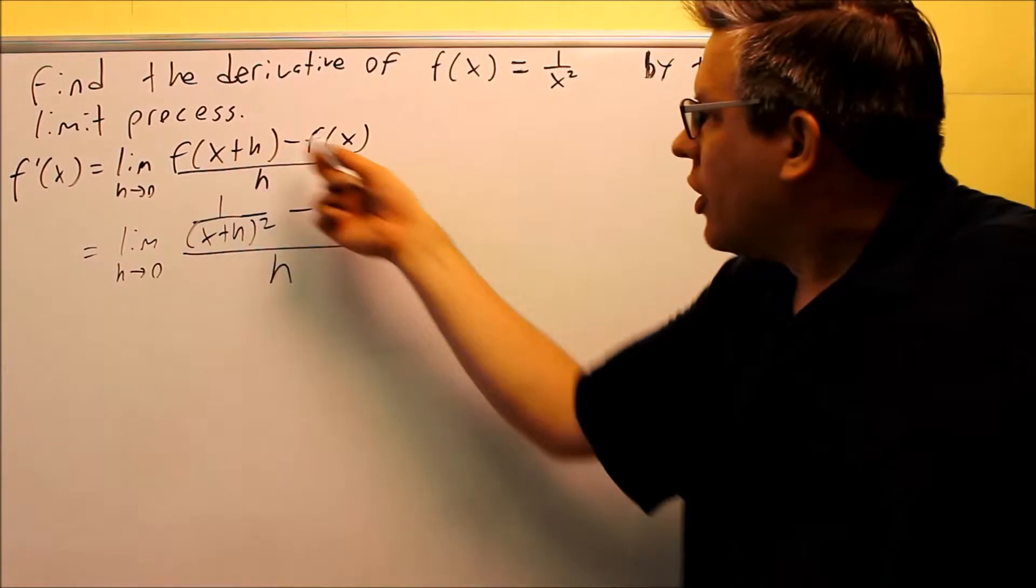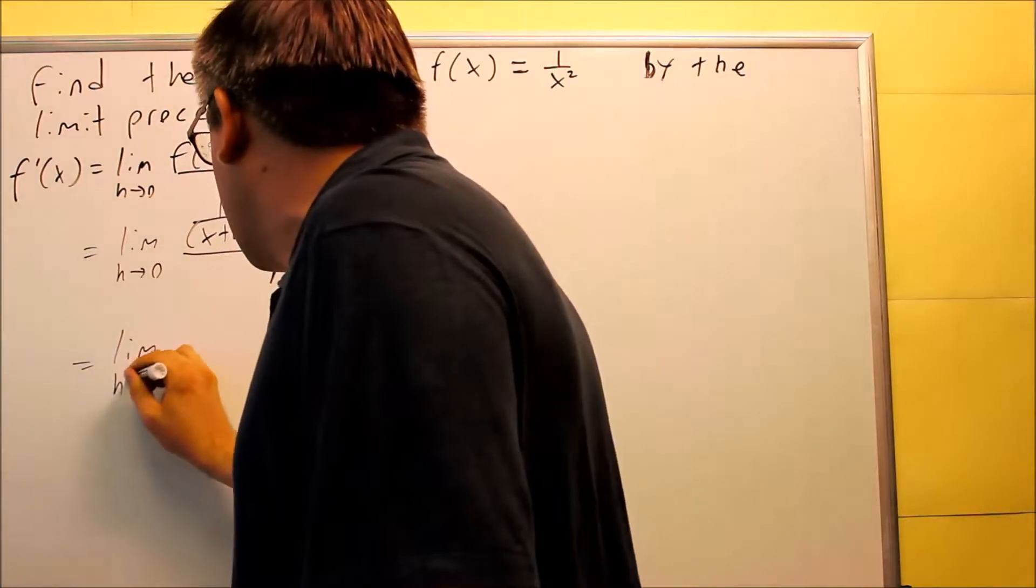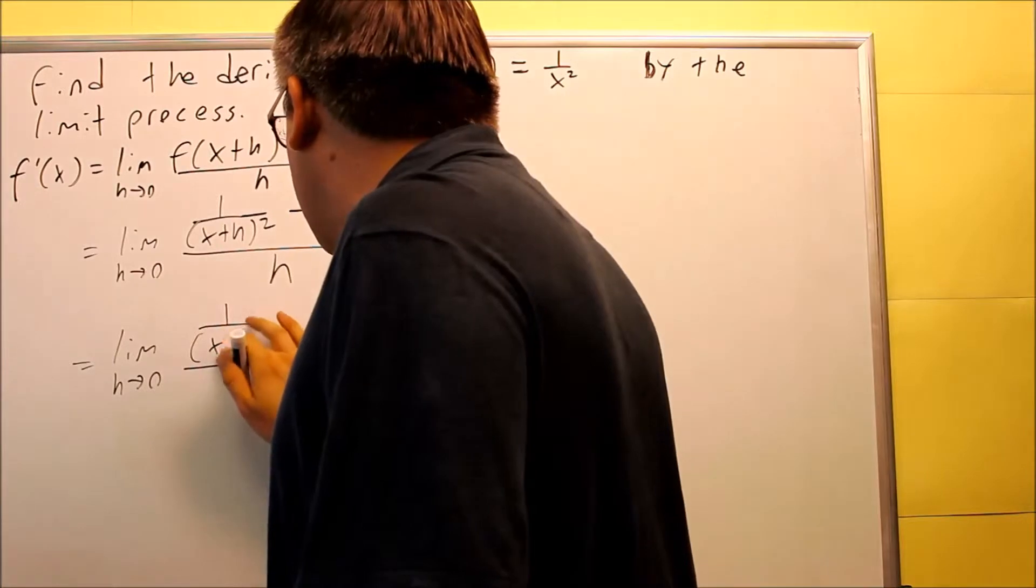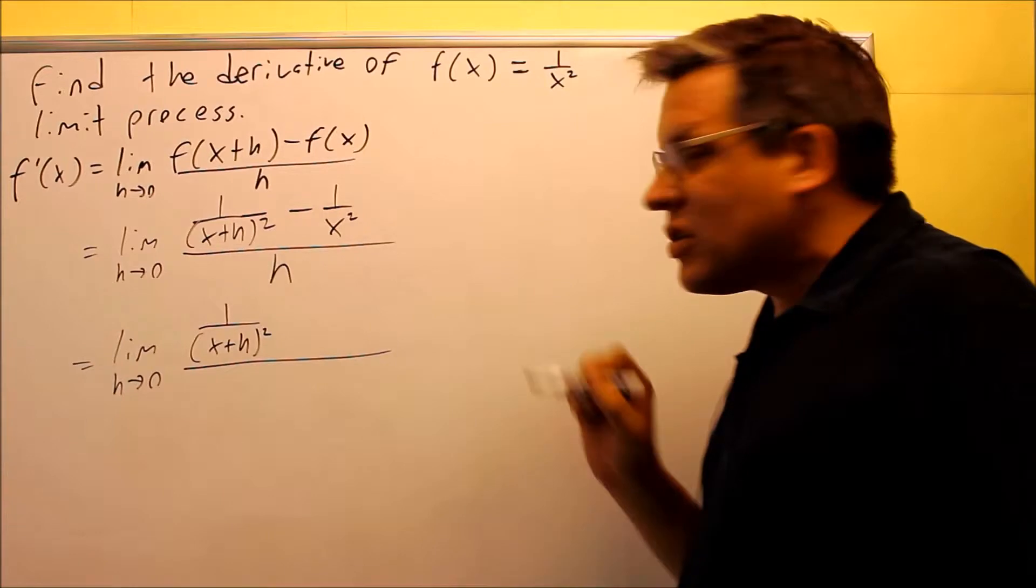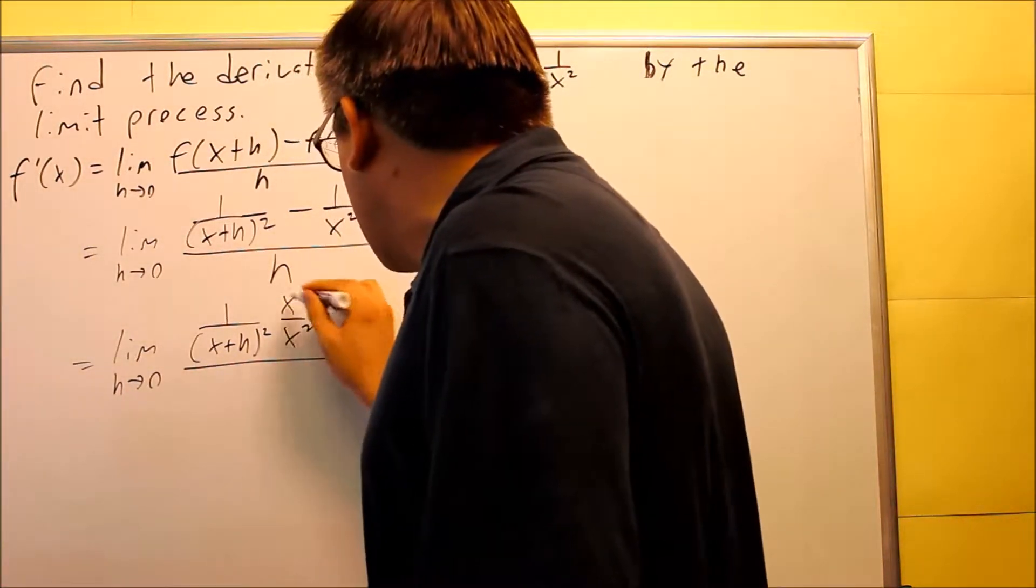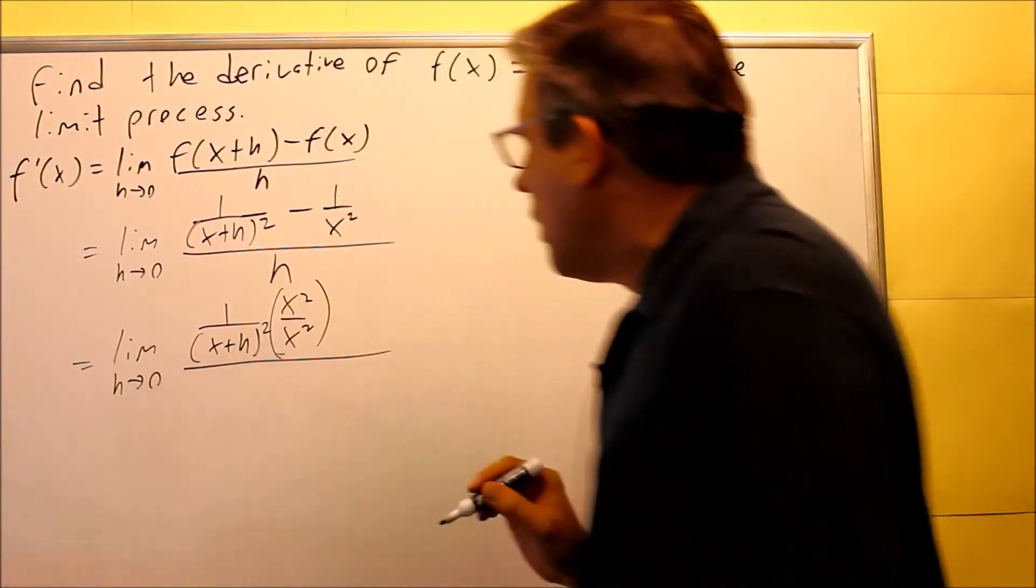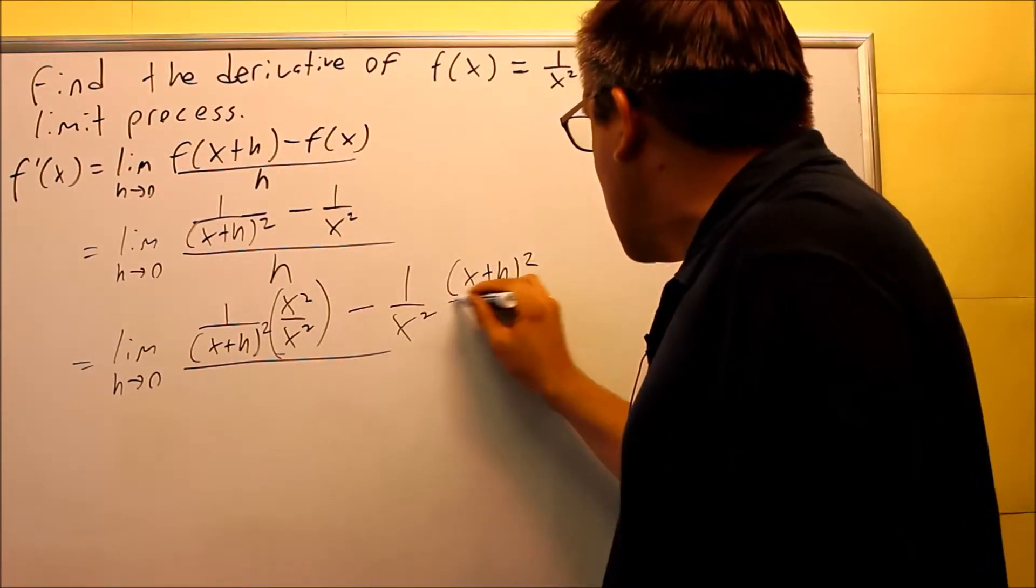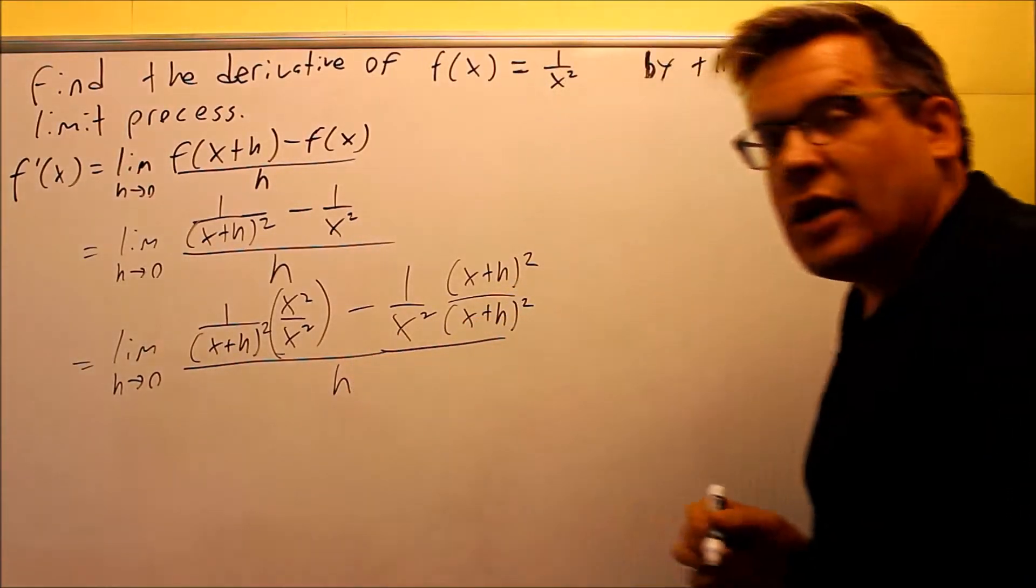You want to find common denominators next, so I'm going to go ahead and multiply each one by what's missing. The common denominator would be both of these together. We're going to multiply top and bottom by x squared over x squared. The other one has the x squared, but we're missing (x+h) squared, top and bottom. And then down below we still have the h.